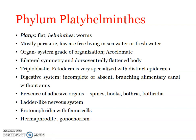Skeletal, respiratory, and circulatory systems are completely lacking. The excretory organs are represented by a pair of tubules — protonephridia with flame cells — though these organs are absent in some primitive forms. The nervous system is represented by a pair of anterior ganglia with longitudinal nerve cords connected by transverse nerves, giving it a ladder-like appearance, which we will look at in detail when we discuss Dugesia.